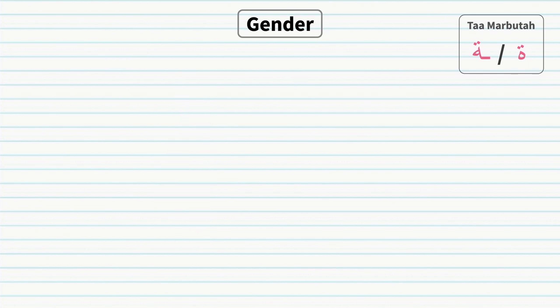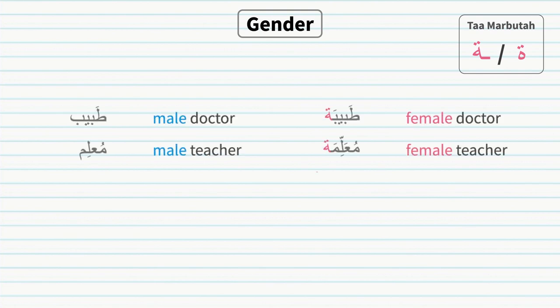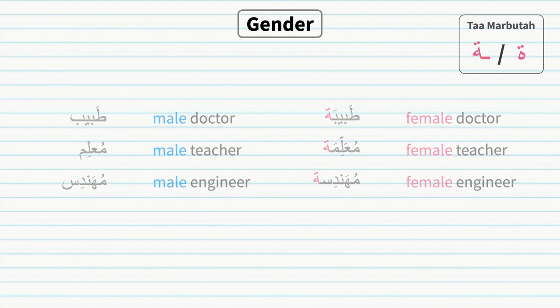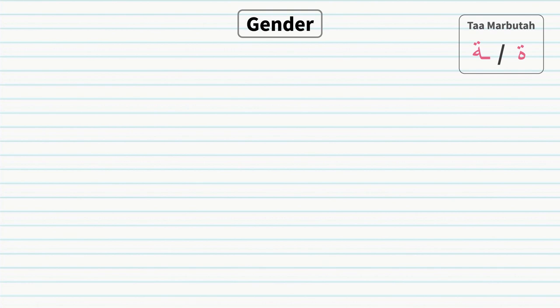Some professions can be turned into their feminine form by simply adding the ta marbuta to them. Adjectives can also easily be made feminine by adding the ta marbuta to the end of them.